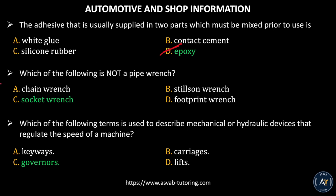Next question: which of the following is not a pipe wrench? Option A, cabinet wrench. Option B, steel strap wrench. Option C, socket wrench. Option D, footprint wrench. The correct answer is Option C, socket wrench.